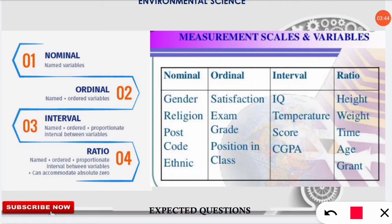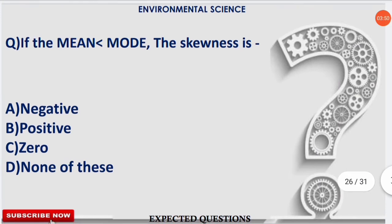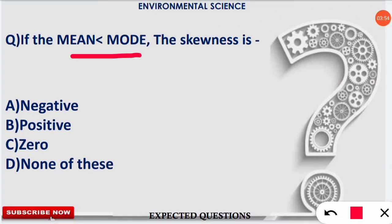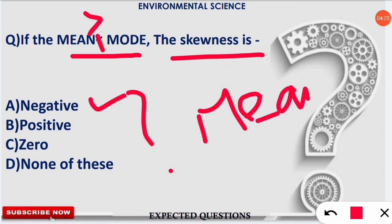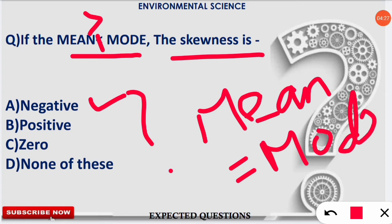These are the four important measurement scales — remember them, as questions from these frequently appear in exams. Next question: if the mean is less than the mode, the skewness is negative (option A). When mean is greater than mode, skewness is positive. When mean is equal to mode, skewness is equal to 0. Note this down — when mean equals mode in any distribution, skewness is 0.